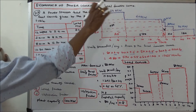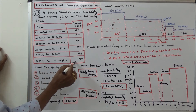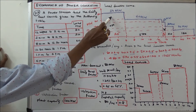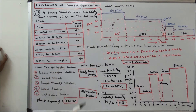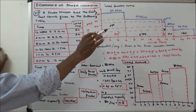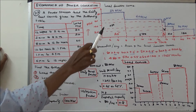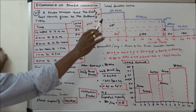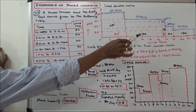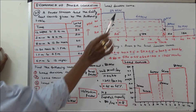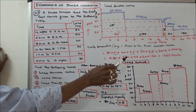First, draw the load duration curve. From 6 PM to 12 night, the load is 80 megawatts. Next is 60 megawatts, 50, 30, and 20. From the load duration curve, we can easily calculate units generated per day — that is equal to the area of the load duration curve. Area equals 80×6 + 60×9.5 + 50×0.5 + 30×2 + 20×6. So units generated per day equals 1255 megawatt hours.